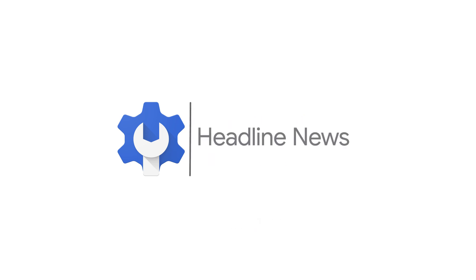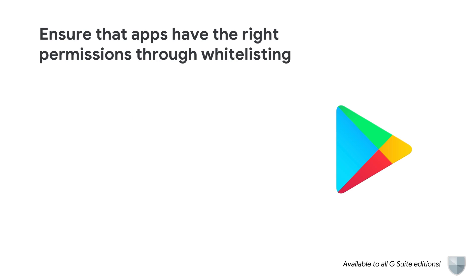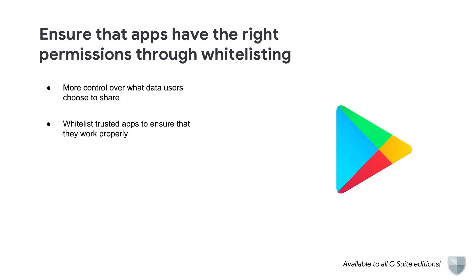Here's the headline news from February. We're changing how users give permissions to apps to access their information. End users now have more control over what data they choose to share with each app. These changes may impact how well the app functions, so we recommend you whitelist apps that you trust. Through whitelisting an app, you'll ensure the app has the permission it needs to work properly for your users.